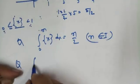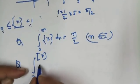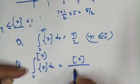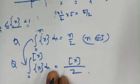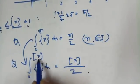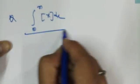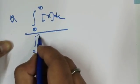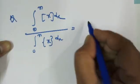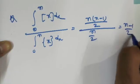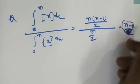Also, ∫₀ᴺ {x} dx = N/2. So the ratio ∫₀ᴺ ⌊x⌋ dx divided by ∫₀ᴺ {x} dx equals [N(N−1)/2] divided by [N/2], which gives N−1.